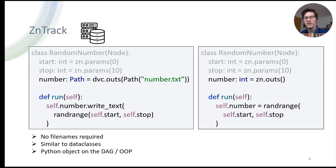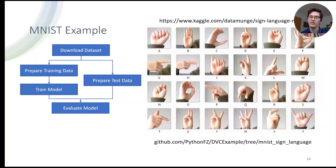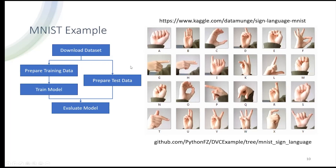With this introduction, I want to go into a more hands-on example. I'm taking the MNIST sign language dataset, which is available on the Kaggle website. The example we're going through is available on this GitHub page — if you want to code along, you can open the Binder instance. What we will do is: download the dataset, run preparation of the data for our training data, do the same for test data, train a model, and then evaluate the trained model on the test data.